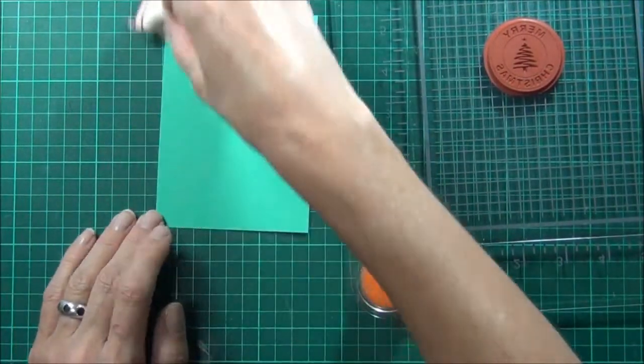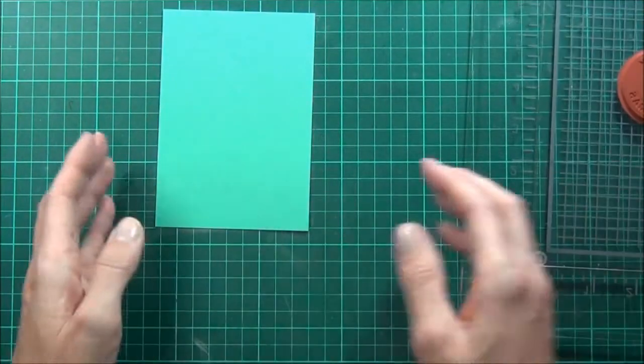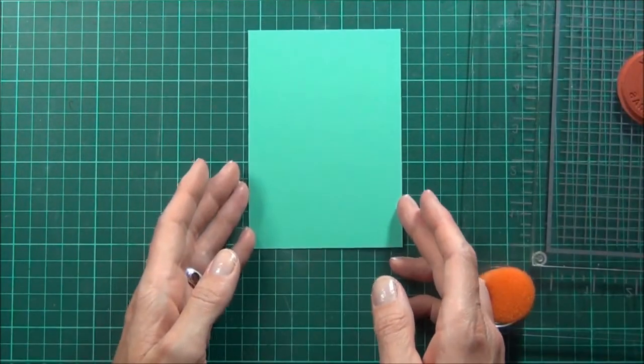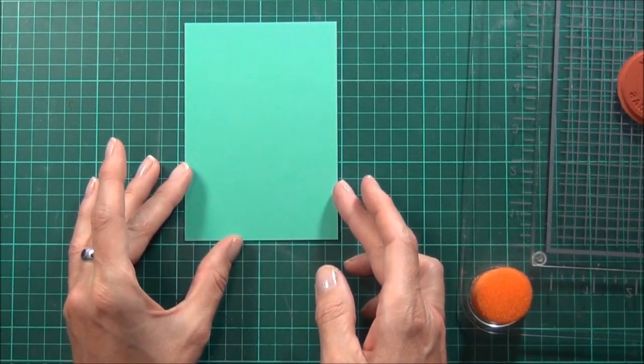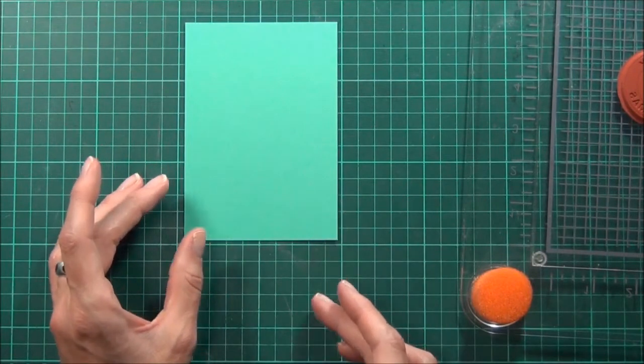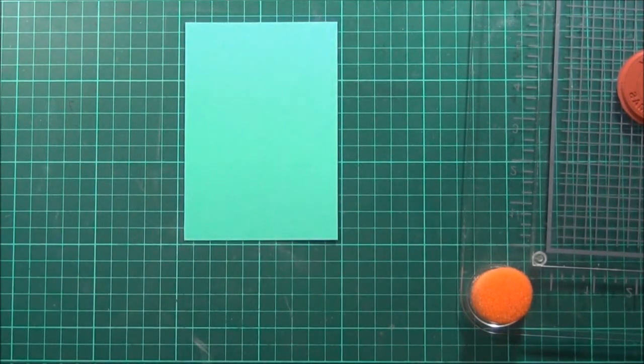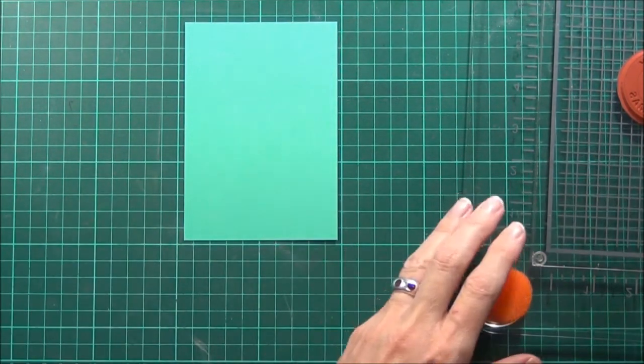I'm using my anti-static pad, giving that a little wipe over the front of the panel, and then I've got my grid lines on my mat. I'm just using those to work out where the middle of the panel will be so that I can line my images up on the actual cardstock.